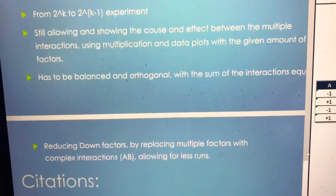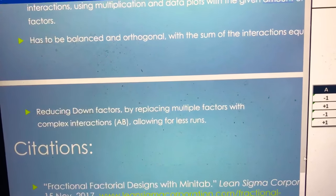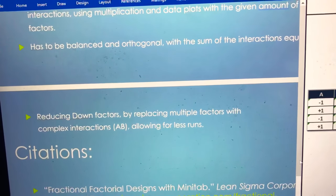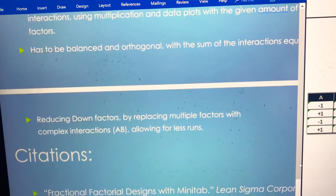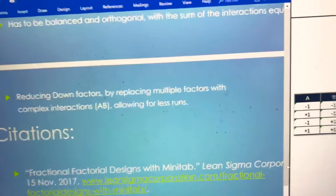It has to be balanced and orthogonal. By reducing the factors, we replace the higher order interactions with complex interactions using A, B, allowing for fewer runs.